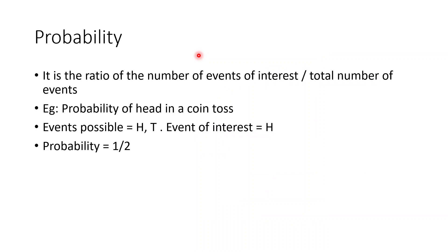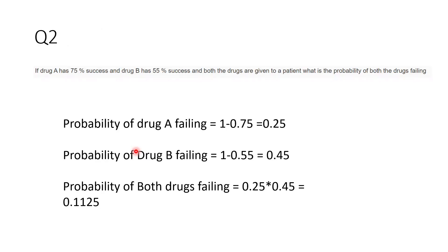Next, what was covered in the tutorial was probability. Probability is nothing but the ratio of the number of events of interest divided by the total number of possible events. For example, the probability of a head in a coin toss: you have two possible outcomes — heads or tails. The event of interest is one outcome, so the probability is 1 divided by 2, which is 0.5.